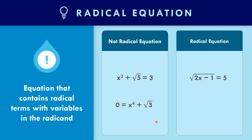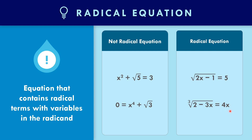An example of a radical equation is the square root of 2x minus 1 equals 5. Another example is the cube root of 2 minus 3x equals 4x. These are radical equations because they contain radical terms with variables inside the radical.